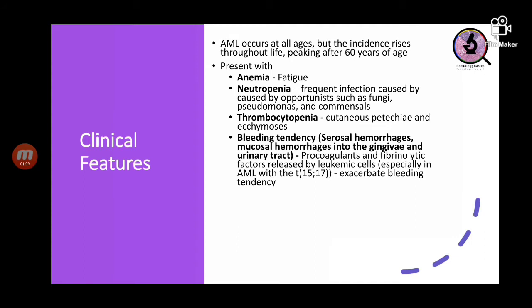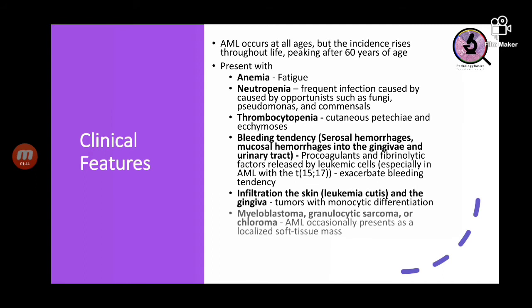Patients may also present with bleeding tendencies, especially in promyelocytic leukemia — AML with t(15;17) — because leukemic cells release procoagulants and fibrinolytic factors. There may be bleeding in serosal surfaces, mucosal hemorrhages including in the gingiva, and bleeding into the urinary tract. AML cells may infiltrate the skin — called leukemia cutis — or the gingiva, particularly in tumors having monocytic differentiation. AML cells may occasionally present as a soft tissue mass called myeloblastoma, granulocytic sarcoma, or chloroma.